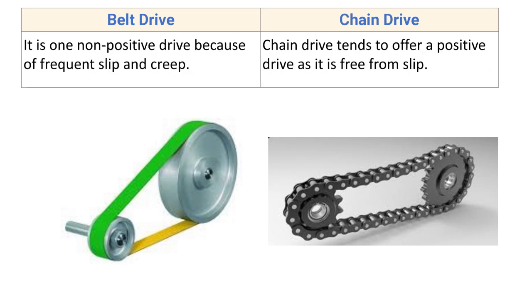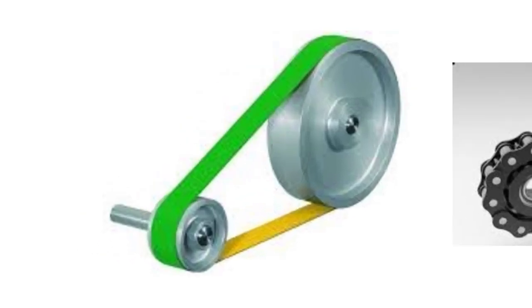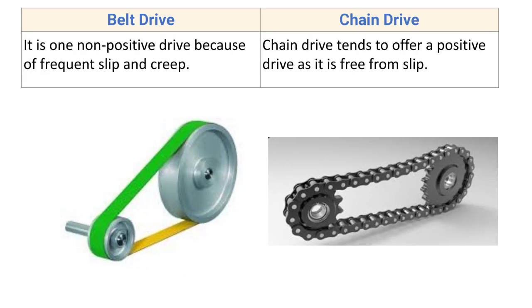Belt drive is a non-positive drive because of frequent slip and creep. Since motion is transmitted due to friction between the inner surface of the belt and the outer surface of the pulley, if the load increases beyond the frictional force, slip occurs between the belt and pulley. This means we do not get an exact velocity ratio, hence belt drive is called a non-positive drive.